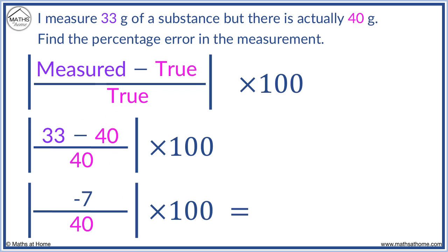The absolute value operation is used to ignore the negative sign and so 7 divided by 40 times 100 equals 17.5% error.